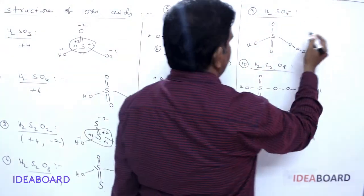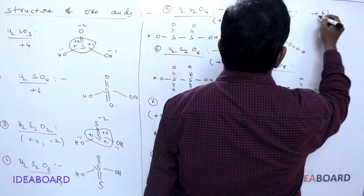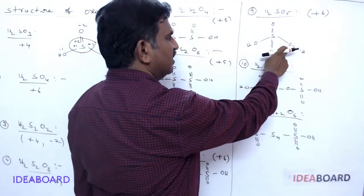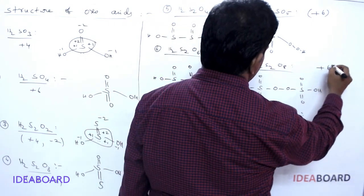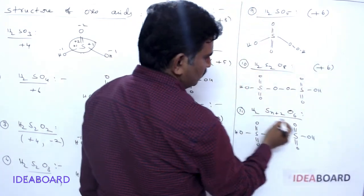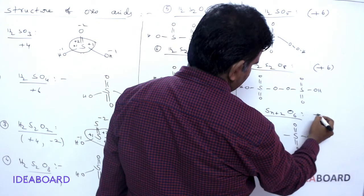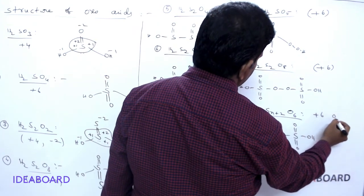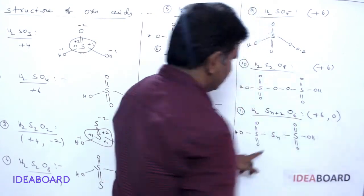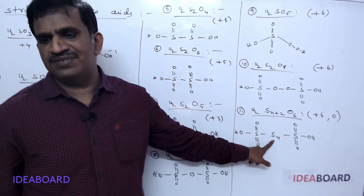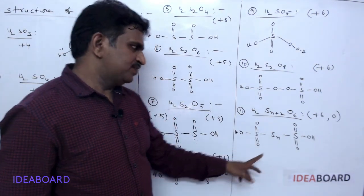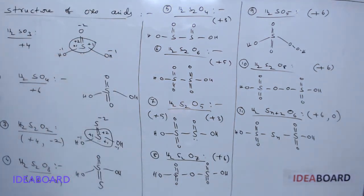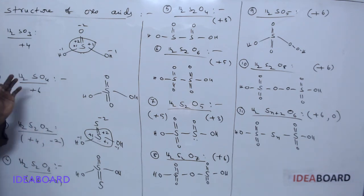In H₂SO₅, the oxidation state is +6 because of the peroxy bond where oxygen is −1. H₂S₂O₈ also has a +6 oxidation state. For polythionic acid, the terminal sulfur atoms have +6 oxidation state while the middle sulfur atoms have 0 oxidation state. These are the different oxidation states and structures of the oxo acids of sulfur.